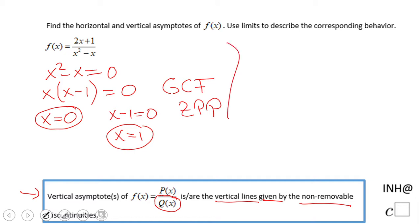If these two guys are non-removable, which they are, then they are the vertical asymptotes. So x equals zero and x equals one are vertical asymptotes.